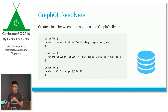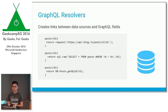The thing about resolver functions is that GraphQL is data store independent. In your resolve function, you can technically do anything as long as it returns the data you need. You could call another API, do raw SQL queries, or use an ORM.